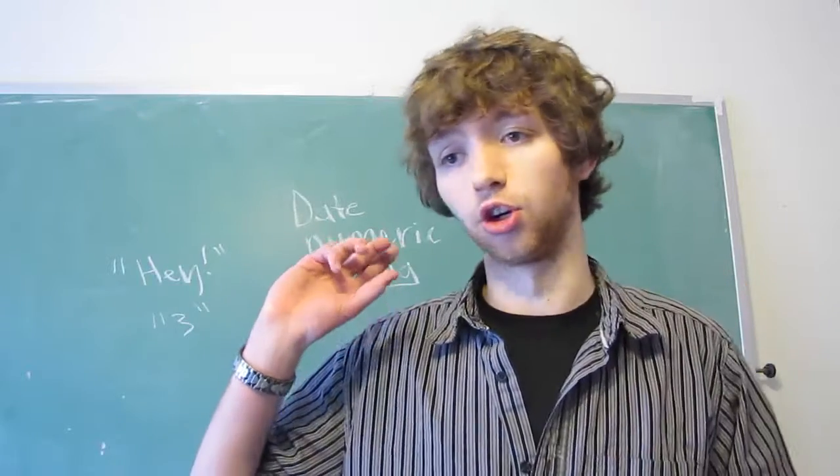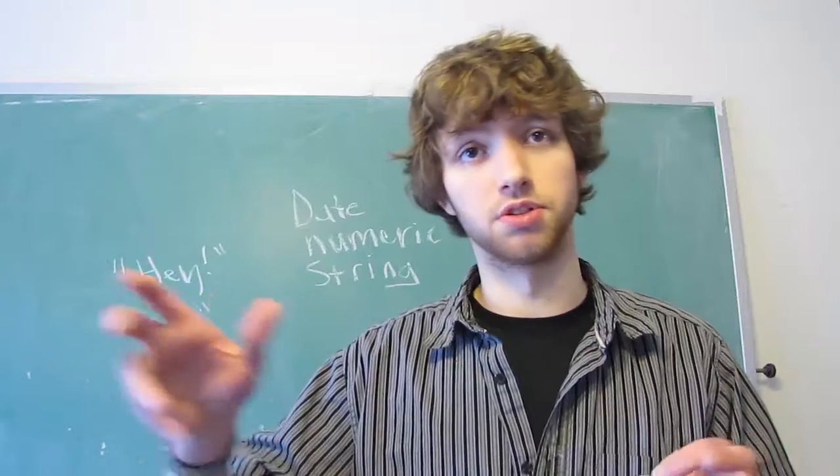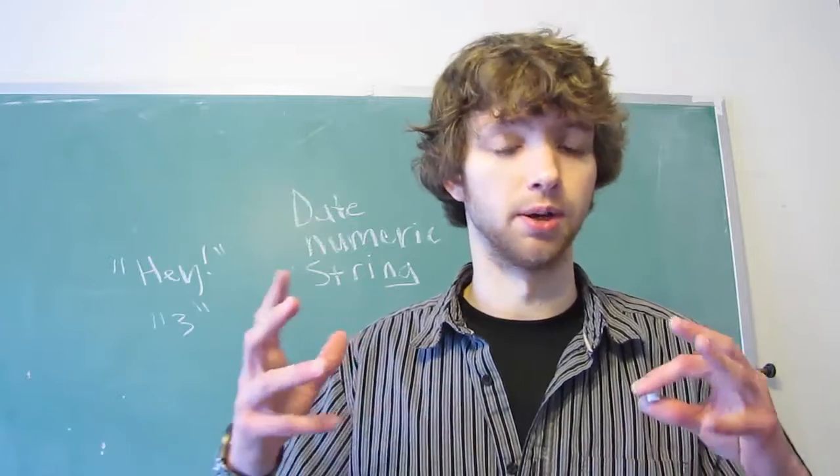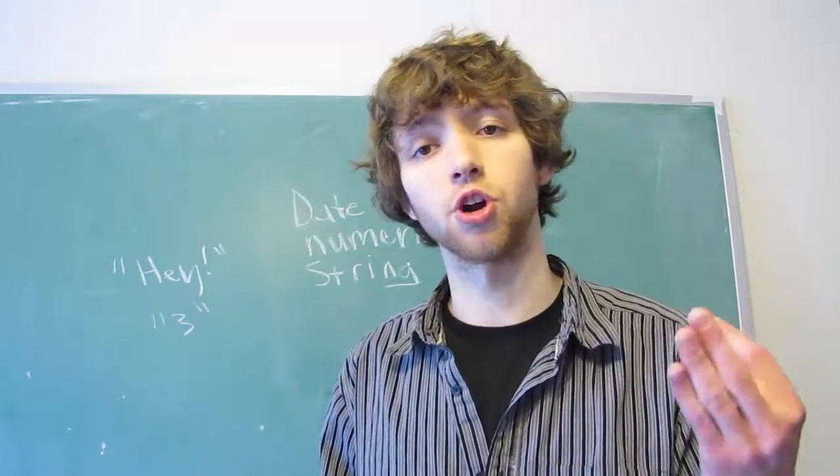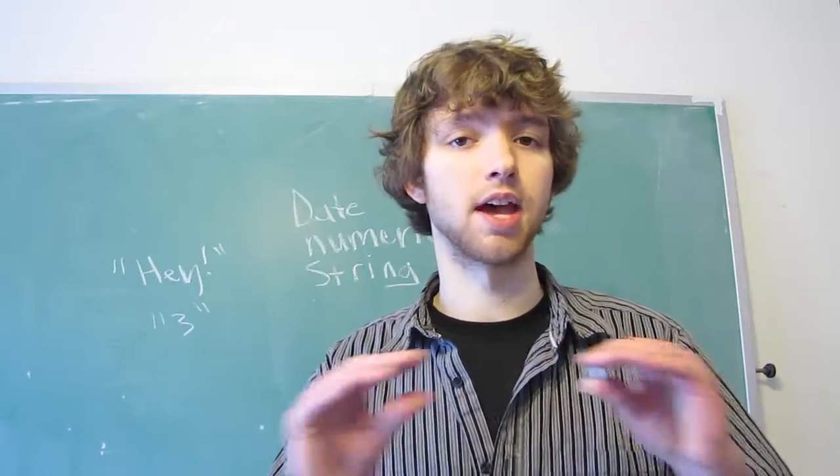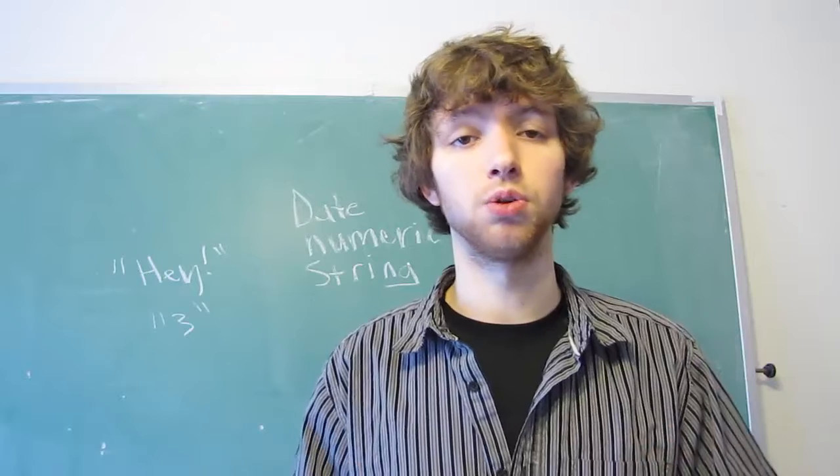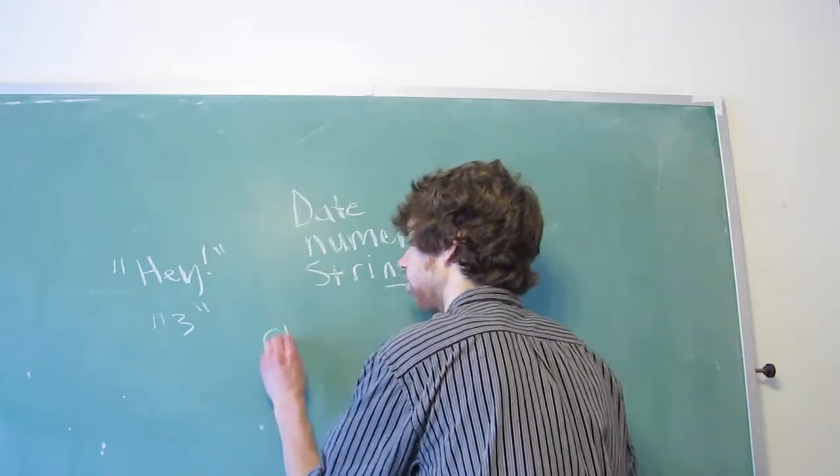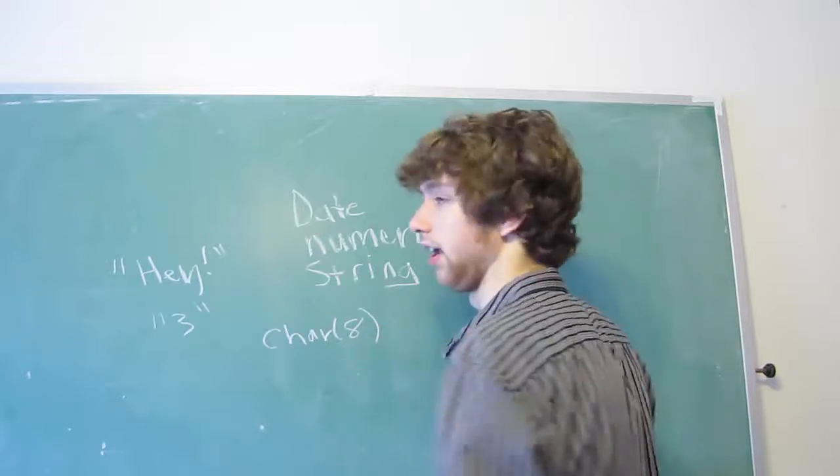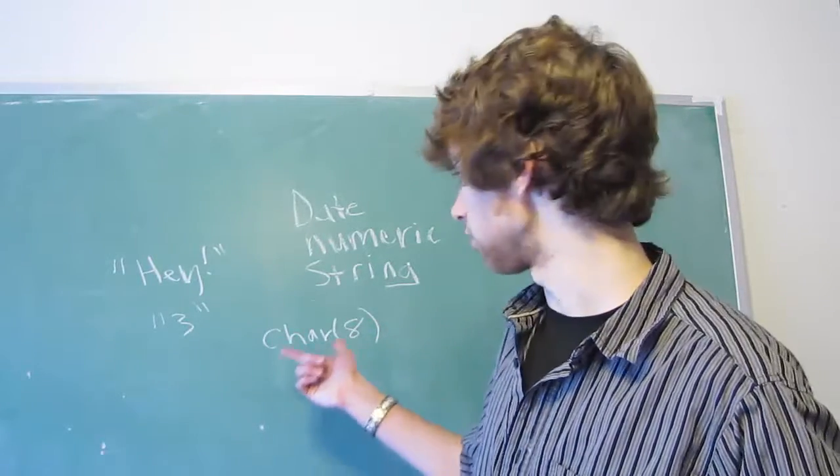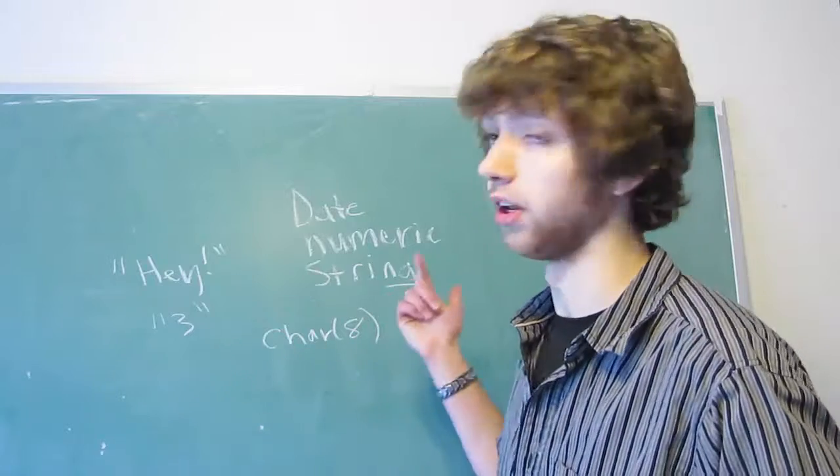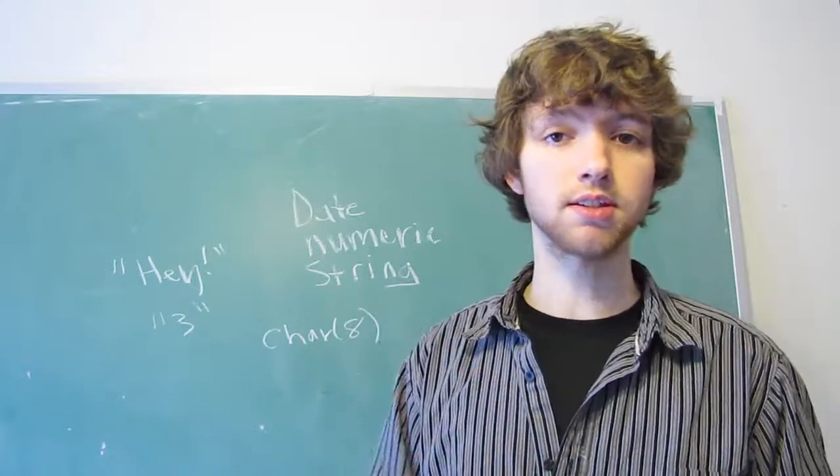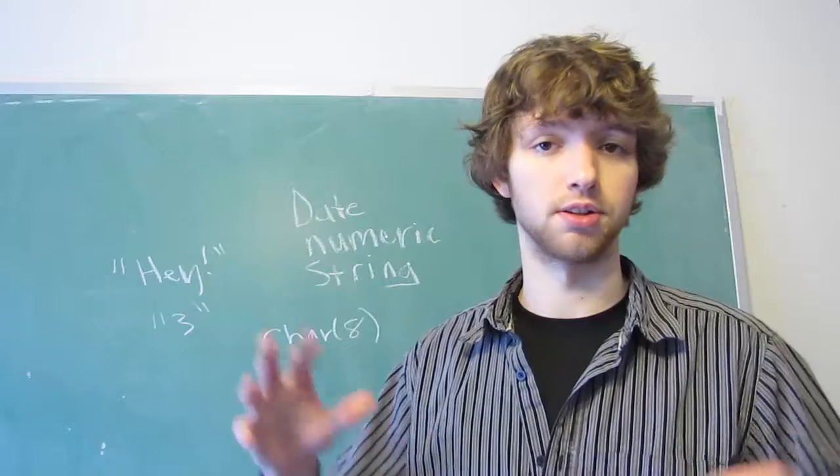You'll have something that's either char or varchar, which those just mean character or variable character. What that means is it's just like a list of characters. The character or char usually is stuff that's set in length, so like a phone number or a zip code, something that doesn't change size-wise. So basically, with a char, you'll have something like char 8, and every single value within that char column is going to be stored as 8 individual characters. Now, even if you don't put 8 characters, let's say you put 6, then there's going to be 2 blank characters in there, so they're all stored as 8.